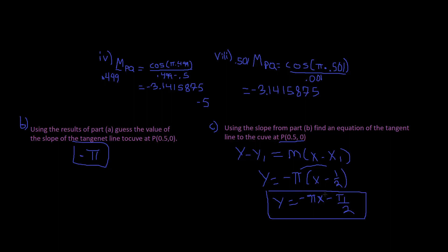Actually, this is positive pi over two — my bad. When you distribute the negative pi times negative one half, that becomes positive. So the final equation is y equals negative pi x plus pi over two.